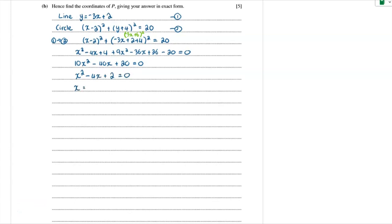It says exact form. And we can't factorize that by inspection. So we're going to have to use the quadratic formula. We'll get 4 plus or minus the square root of 16 minus 8 over 2. That gives us the square root of 8, which we can simplify the answer to be 2 root 2.